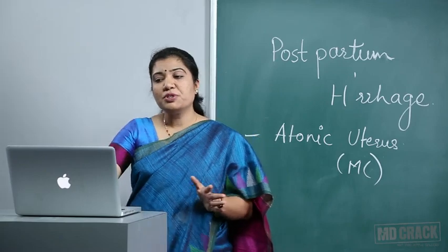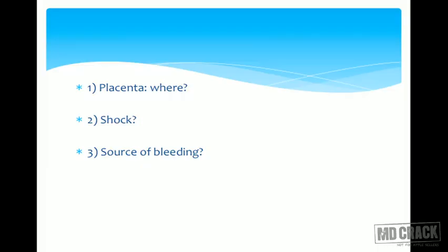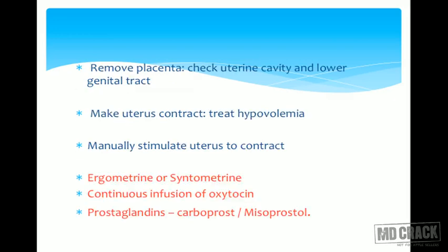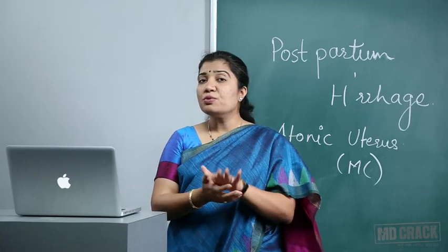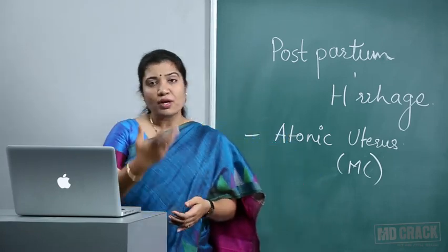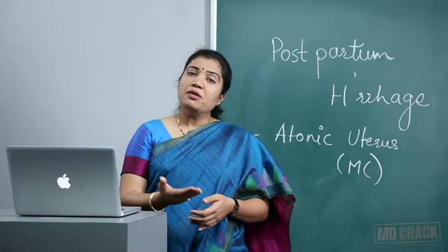Immediately send blood for haemoglobin, cross matching, and Rh typing — this should ideally be done before the patient delivers. Examine the patient: check whether the placenta is out or still retained, whether it is adherent, and whether the patient is in shock. Identify the source of bleeding — if bleeding is coming from the uterus, the most likely reason is atonic uterus. Remove the placenta, check the uterine cavity and lower genital tract, and make the uterus contract while treating hypovolaemia simultaneously.